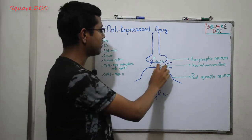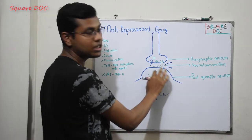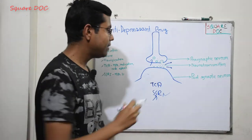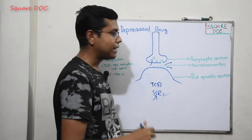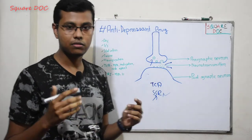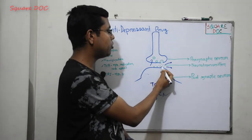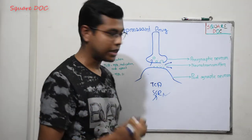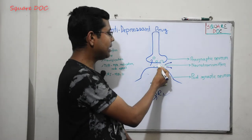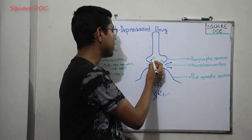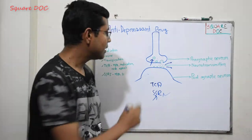A synapse is a connection between neurons. A neuron has a presynaptic junction and a post-synaptic junction. The neurotransmitter is released from the presynaptic neuron into the synapse, and the post-synaptic neuron receives it via receptors. After action, the neurotransmitter can be degraded by enzymes or taken back up by the presynaptic neuron through reuptake. It can also diffuse out of the tissue cell. These are the four phases of neurotransmitter activity.